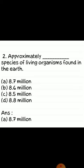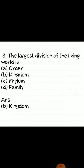Second question: approximately how many species of living organisms are found on Earth? Options: 8.7 million, 8.6 million, 8.5 million, 8.8 million. Answer: A, 8.7 million.